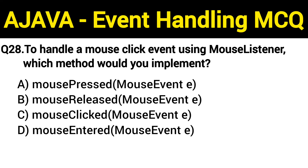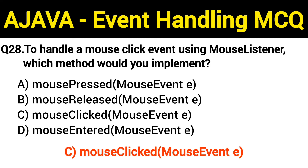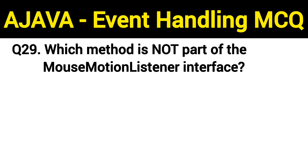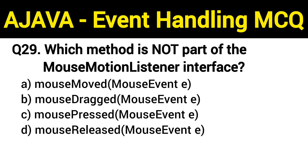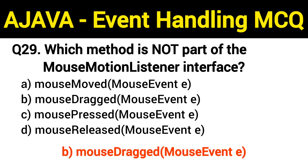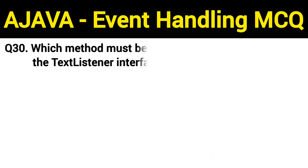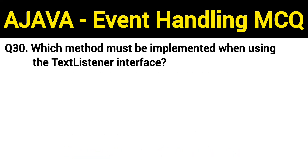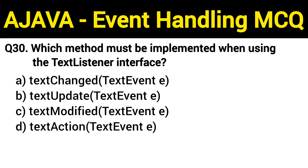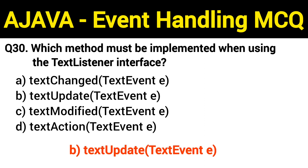Question number 28: to handle a mouse click event using MouseListener, which method would you implement? The right answer is option C: mouseClicked() method. Question number 29: which method is not part of the MouseMotionListener interface? The right answer is option B: mouseDragged() method. Question number 30: which method must be implemented when using the TextListener interface? The right answer is option B: textUpdate() method.